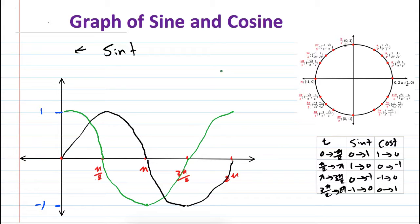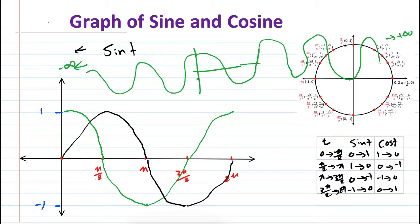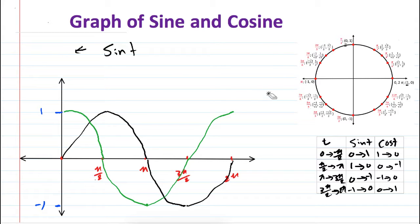The graph of cosine of x starts at 1, and if I go more than 2 pi it comes down again, then goes up and down repeating. The domain is all real numbers and the range is between minus 1 and 1. The graphs of sine and cosine look alike, but the starting points are different: sine of x starts at 0, while cosine starts at 1.